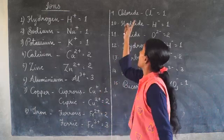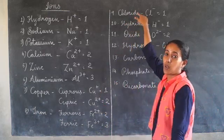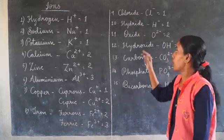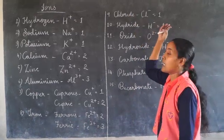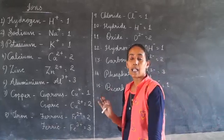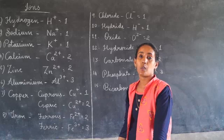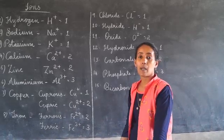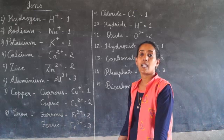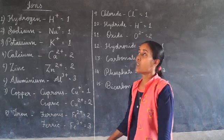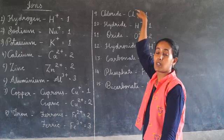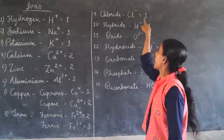Now we will go to chlorine — the chloride ion. Chlorine's outer shell contains 7 electrons. Similarly, bromide and iodide — chlorine, bromine, and iodine all contain 7 electrons in the outer shell. In order to obtain a stable electronic configuration, they need one more electron. So when chlorine gains one electron, it becomes Cl minus. The valency is 1.